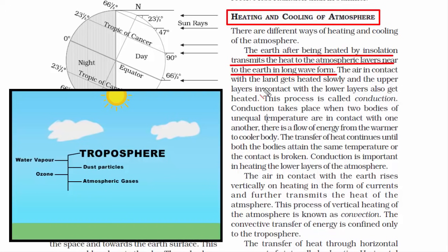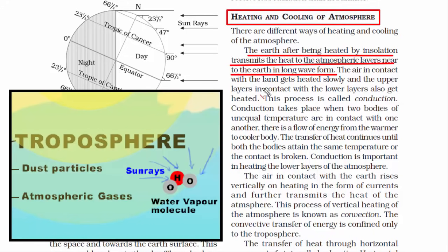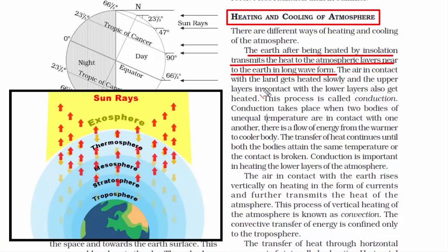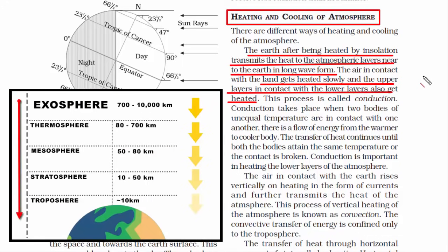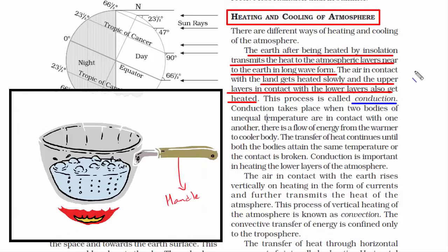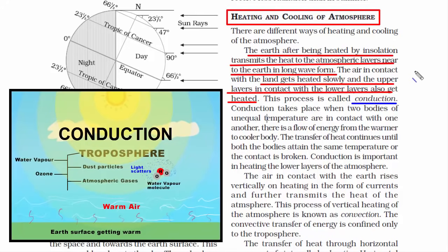In between the troposphere and earth's surface, we have atmospheric gases, water vapour, clouds, and ozone. The solar energy comes in contact with these, and while some energy is absorbed, some is reflected back to space. As the air in contact with the land gets heated up, the surface of earth gets ultimately heated. All the layers of the atmosphere and the air in contact with the land get heated one after another — this process is called conduction. Similar to a handle on a cooking utensil: once the utensil gets heated, the heat is slowly transmitted to the handle.